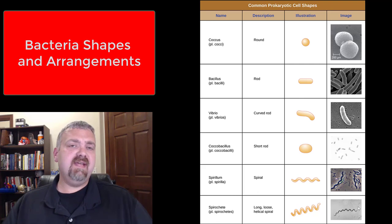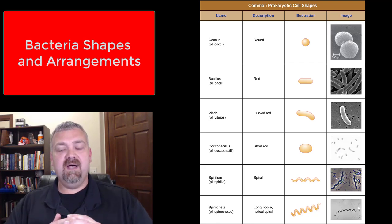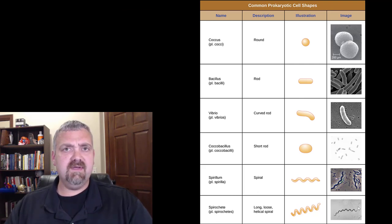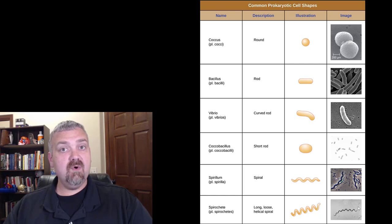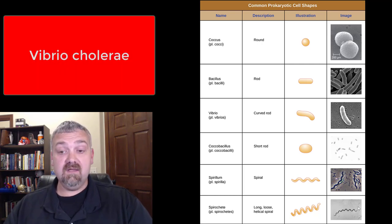Next we have vibrio. It's technically a curved rod, but they look like a comma. There's so many examples of the cocci and the bacilli that we'll cover them as we go. But really only the key example of a vibrio that we're going to talk about very much is Vibrio cholerae, the causative agent of cholera.